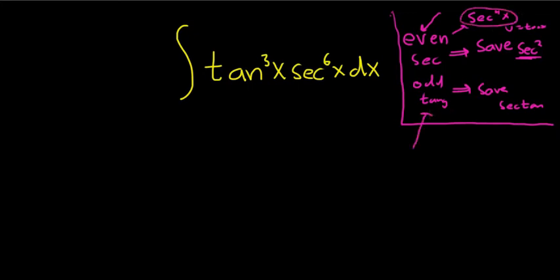On the other hand, if we save a secant tangent, that's going to leave us with tangent squared. That's not as much work because our u in this case is going to be secant. Let's go ahead and do it this way, and if that wasn't clear, you'll see what I mean when we go through the problem.